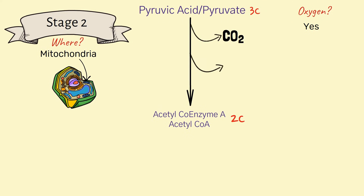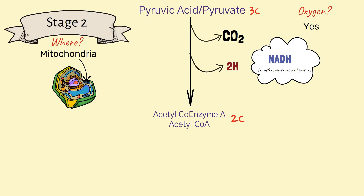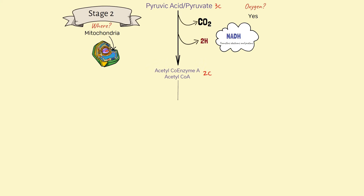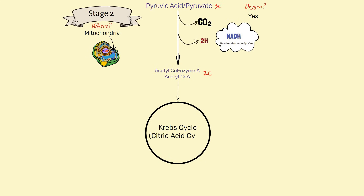This happens by removing a carbon dioxide and also a pair of hydrogen atoms. Those hydrogen atoms contain electrons and protons and they get picked up to form NADH. So acetyl-CoA, this two-carbon molecule, now enters into the cycle of reactions known as Krebs cycle or the citric acid cycle.